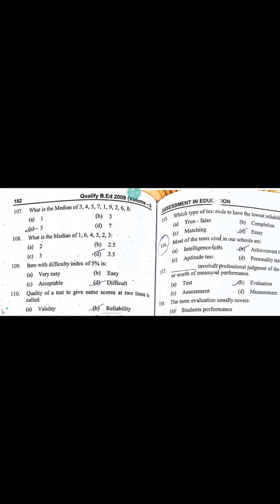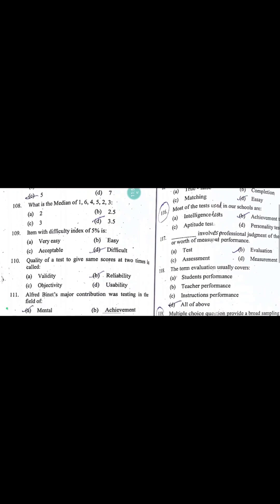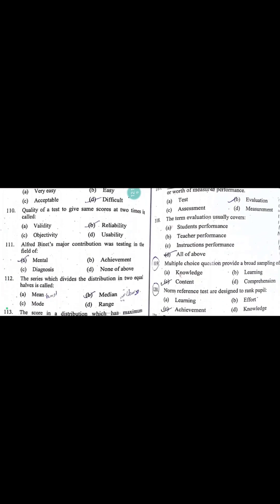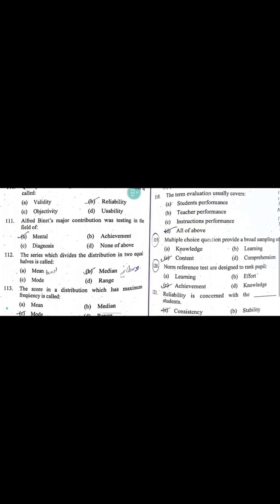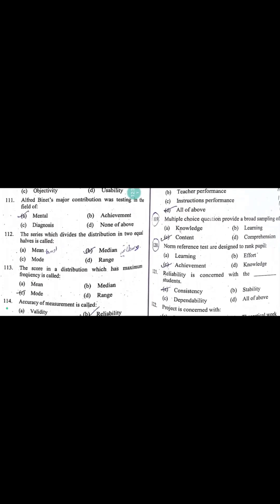An item with difficulty index of 5 percent falls into the difficult category. Quality of a test to give the same score at two times is called reliability. Here, the same score is mentioned, which indicates reliability. Alfred Binet's major contribution was testing in the field of mental ability. The score which divides the distribution into two equal halves is called median. The score in a distribution which has maximum frequency is called mode.